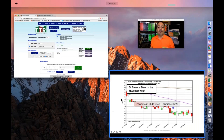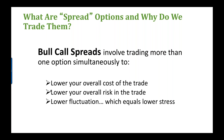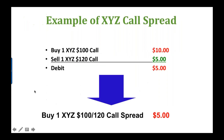Let's talk about call and put spreads. A bull call spread involves trading more than one option simultaneously. It allows us to lower the overall cost, the risk, and lower the fluctuation because you're doing something closer to Delta neutral — it's a positive Delta trade but it won't move lock-step like a call option would, because it doesn't cost what a call option does. A bull call spread involves buying a lower strike call and selling a higher strike call using the same asset and expiration but different strikes.